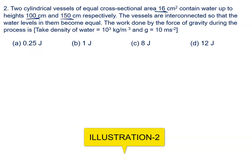The vessels are interconnected so that water levels in them become equal. We have to find the work done by the force of gravity during the process. We have to take the density and gravity as shown.